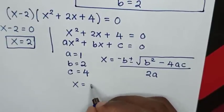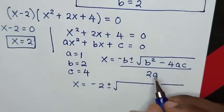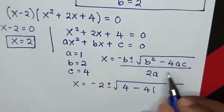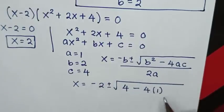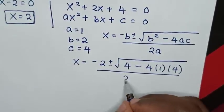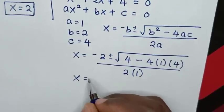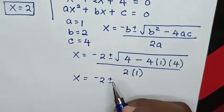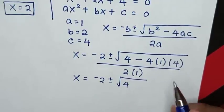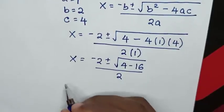Substituting the values: x = (-2 ± √(2² - 4 × 1 × 4)) / (2 × 1). That gives x = (-2 ± √(4 - 16)) / 2.